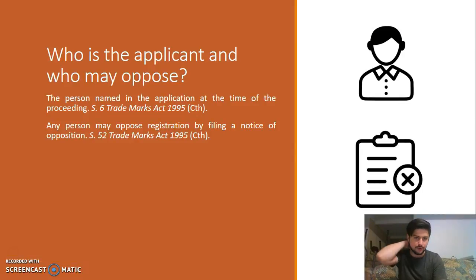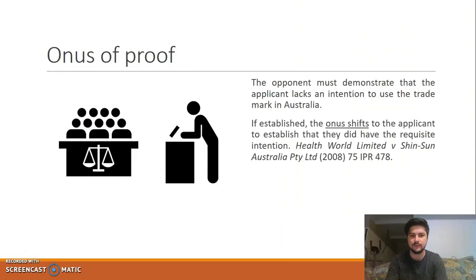The applicant is the person who is named in the application for registration at the time of the proceeding, and any interested third party may oppose the registration by filing a notice of opposition. The onus of proof is on the opponent to demonstrate that the applicant lacks an intention to use the trademark in Australia.